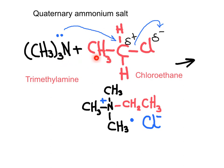This is an example of the formation of a quaternary ammonium salt. We have the molecule of trimethylamine, which is a tertiary amine, reacting with the haloalkane chloroethane. This carbon is partially positively charged because of the electronegativity of chlorine, which is pulling electron density. We can have the reaction between the base and this partially positive carbon, forming a brand new covalent bond between the nitrogen and the carbon. The result is a quaternary ammonium salt with a positive charge on nitrogen and an ionic bond to chlorine.